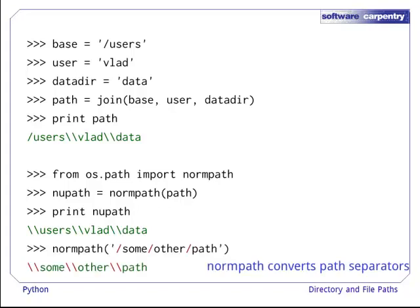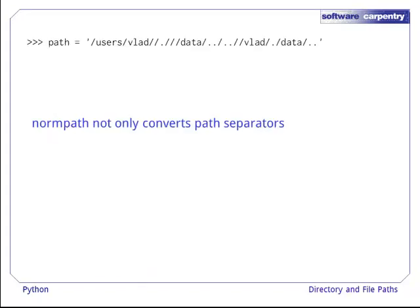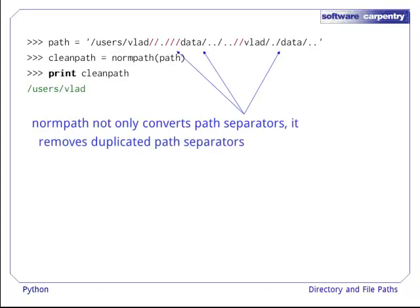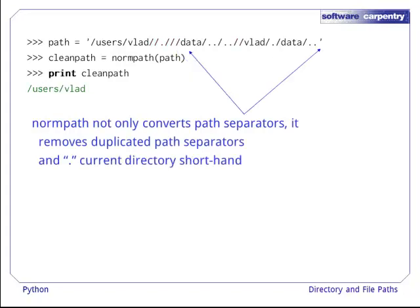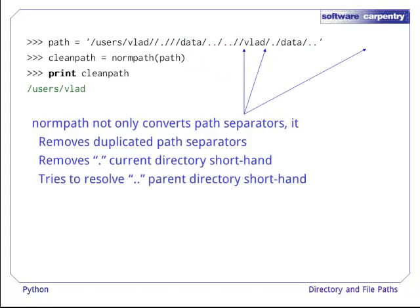NormPath does more than just convert file separators. Take, for example, this messy looking path. Putting this into NormPath gives us something far cleaner. NormPath also removes duplicated file separators, and removes the dot shorthand for the current directory. It also tries to resolve the double dot shorthand that represents parent directories.